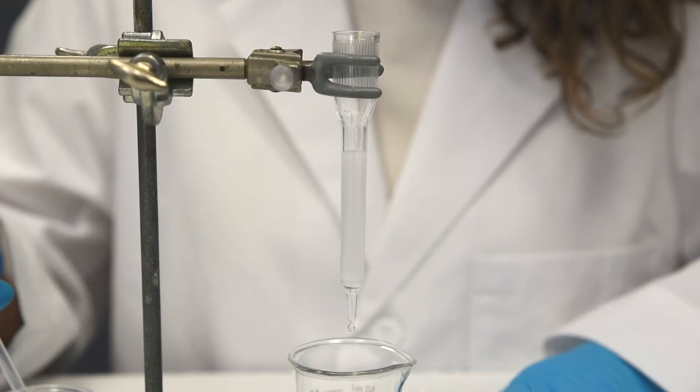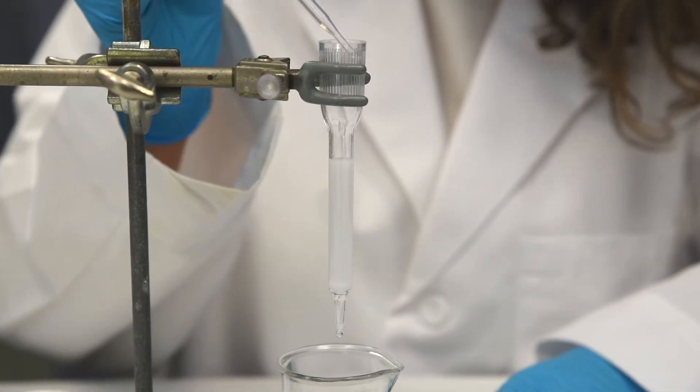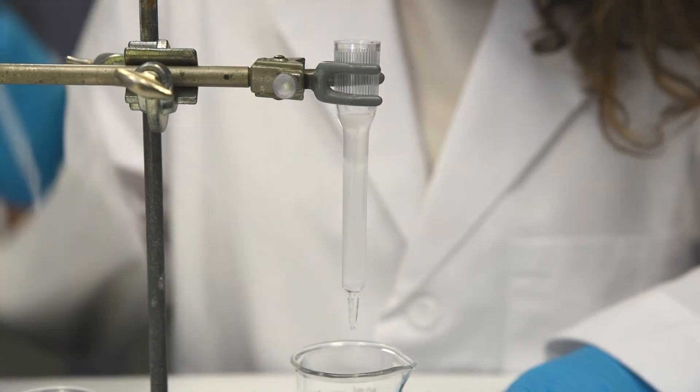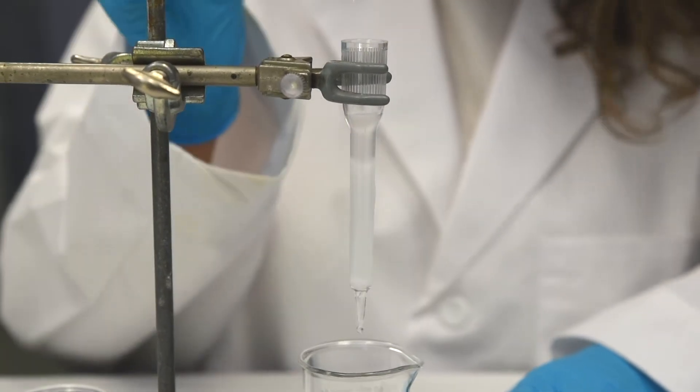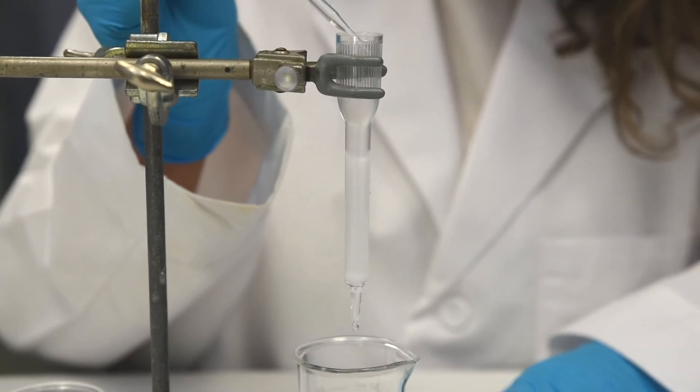Step 6: Wash the packed column with 5 ml of the 1x elution buffer. Always keep a thin layer of elution buffer on top of the packed matrix to prevent drying.